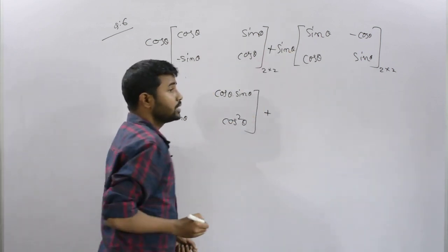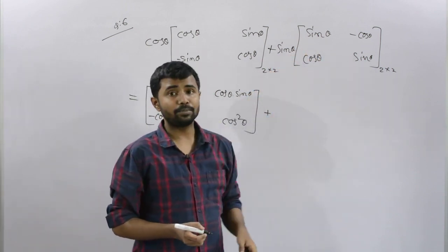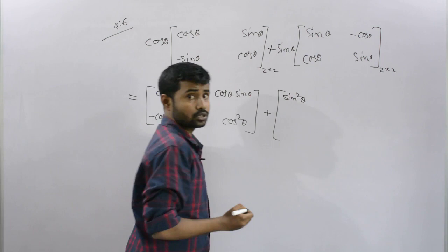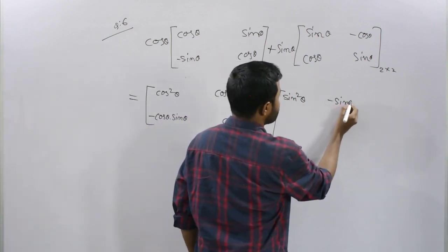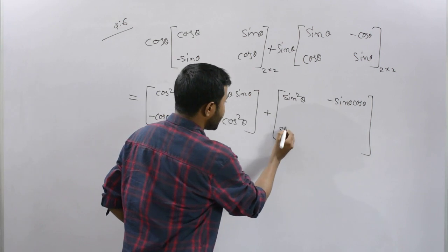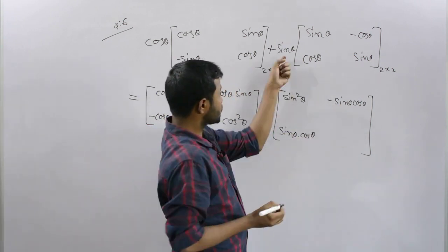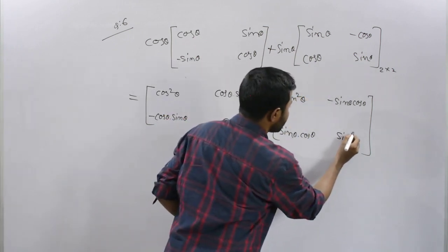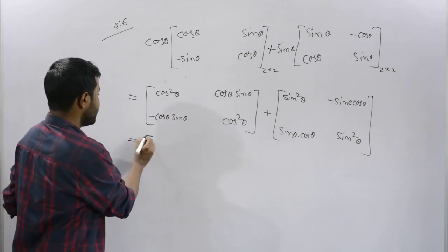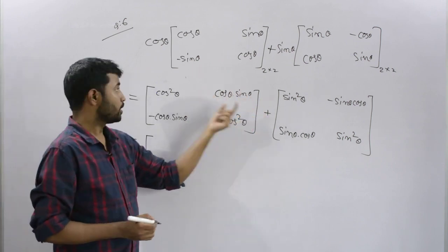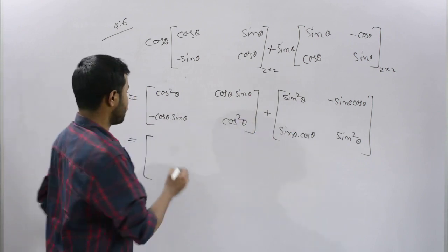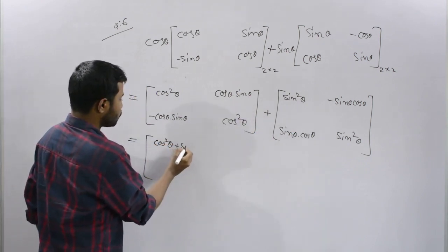For sin theta, multiplying the same matrix element-wise gives sin square theta. Then sin theta minus cos theta, multiply minus sin theta cos theta, that means sin theta cos theta. This is a 2 into 2 order matrix. Now for the addition, we add the corresponding elements: cos square theta plus sin square theta.